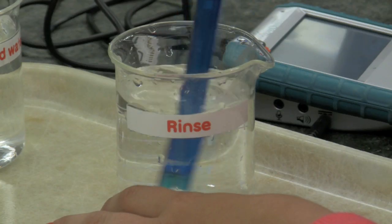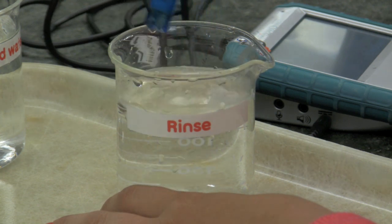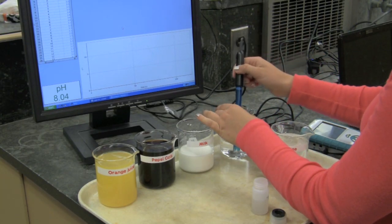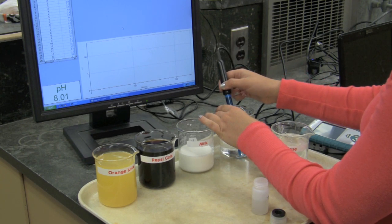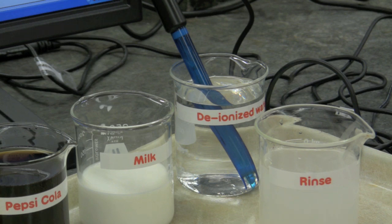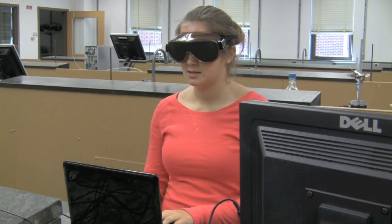She removed the probe from the milk and is placing it in the rinse again. After a few seconds, she places the probe into a beaker of DI water directly to the right of the beaker of milk. She will record the data given by Logger Pro in the Word document a final time.